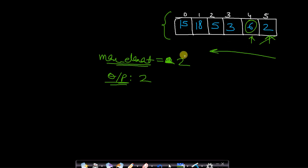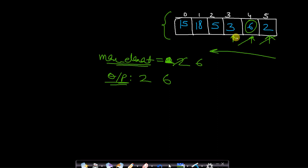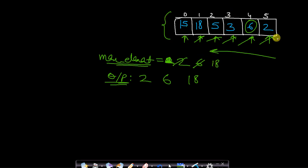You can see that 6 is greater than the max element seen so far, therefore there will be no element greater than 6 lying to its right. So we output 6 and update max_element to 6. Now we move left and compare 3 with 6 — 3 is lower than 6, so this can never be a leader. We compare 5 with 6 — 5 is lower than 6, so we move left again. We can see that 18 is greater than 6, therefore 18 will be a leader. We update max_element to 18 and move to 15. 15 is lower than 18, so it cannot be a leader and all elements have been traversed.